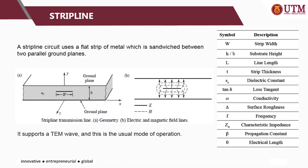As discussed earlier, the strip line basically includes a flat strip of metal which is sandwiched between two parallel ground planes — this is the microwave strip line. In comparison, the microstrip has the conductor placed on top, but for strip line the metal strip is sandwiched in between two parallel ground planes. The table on the right-hand side shows notation and symbols used in the strip line and microstrip line analysis.